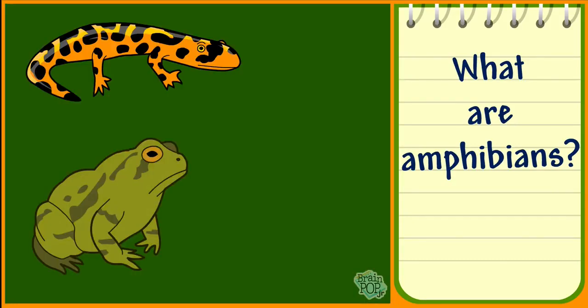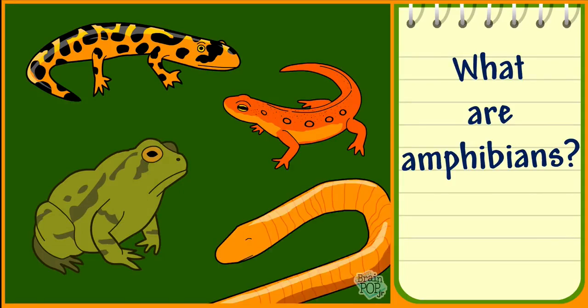Toads, salamanders, newts, and cecilians are all types of amphibians.